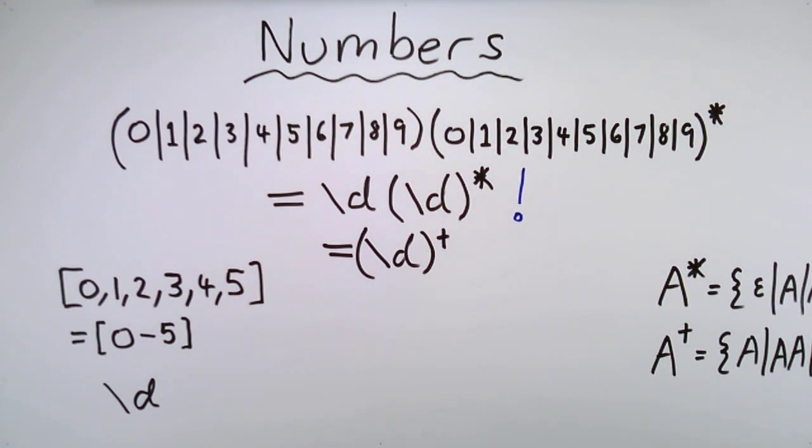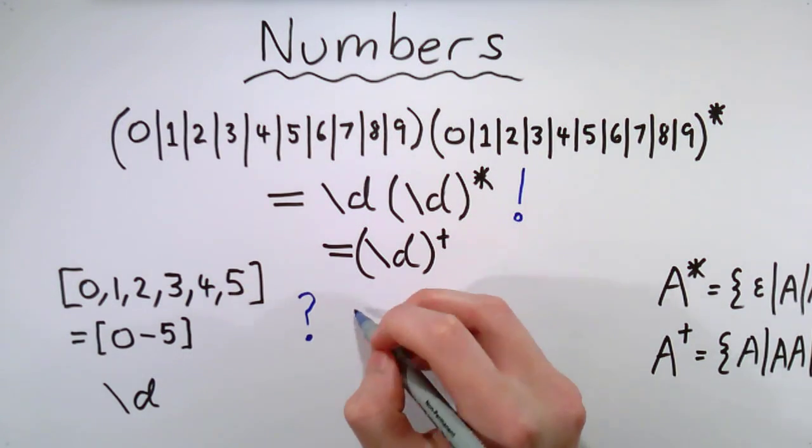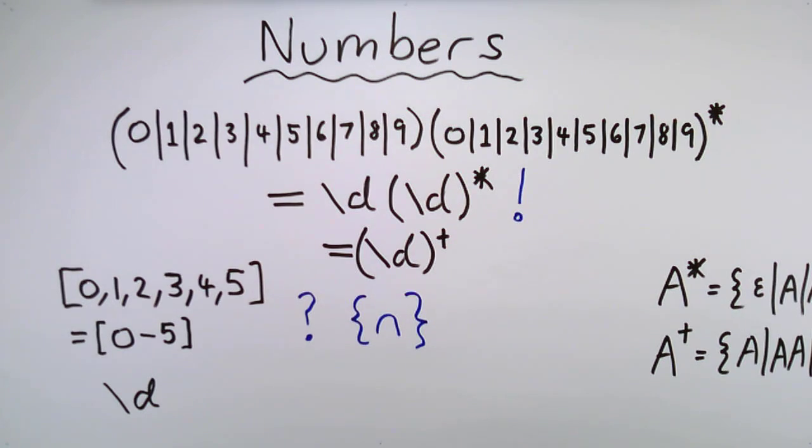Other common symbols are the question mark, which matches an optional occurrence of the symbol, a number in curly braces, which matches exactly that number of the previous symbol, and the period or full stop, which matches any single character once.